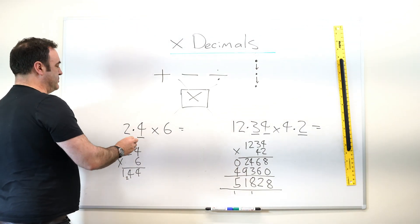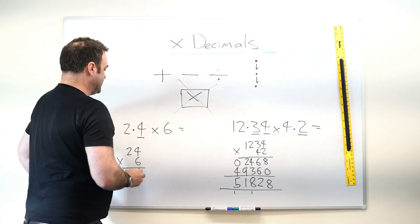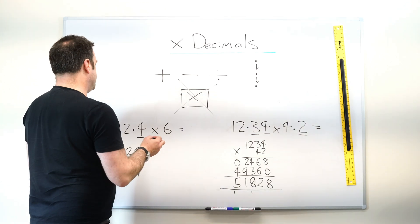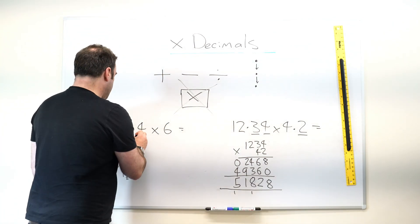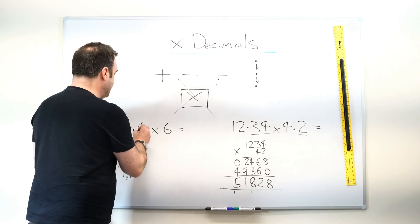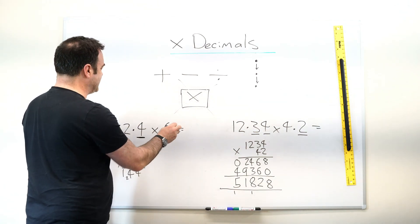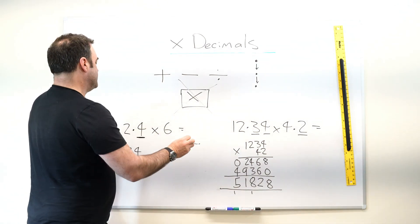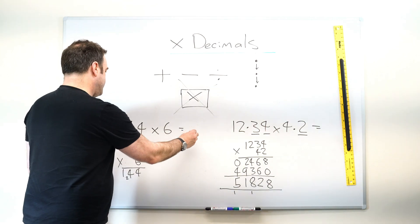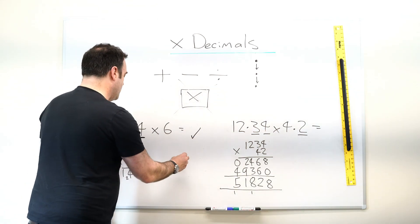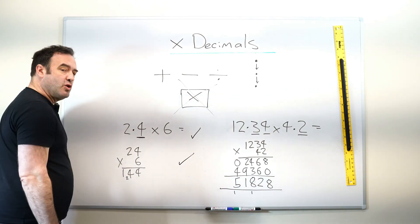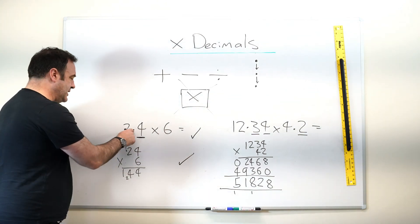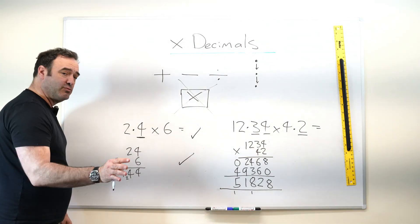So let's just take this example, 2.4 times 6. What I will say to children is write the question out as it appears, underline any decimal places, any number to the right of a decimal point in the whole question. So copy it out, write it out without. So we copy it out as a normal multiplication, but we do not include the decimal point. That's really important. That's where things go wrong.